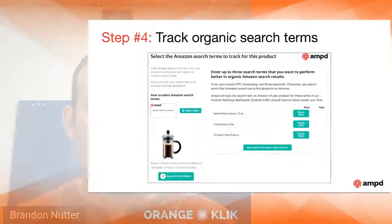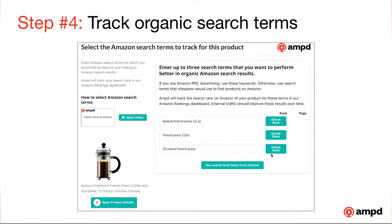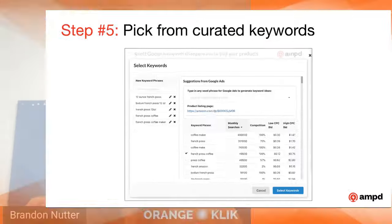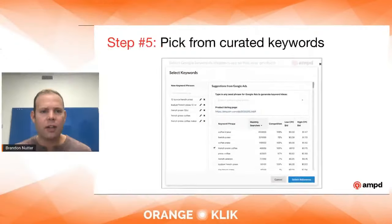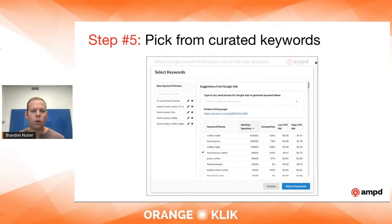We also track organic search terms. Since rank does go up organically, we want to make sure we can track these organic search terms and give you a way to understand not only your ACoS and ROI across your account, but your organic lift across the search terms you're using to send Google traffic to Amazon. We have a first-party integration with Google Ads, which means we can find really good, high-quality keywords, show the cost per click, and how many searches are happening.